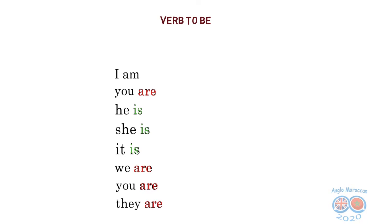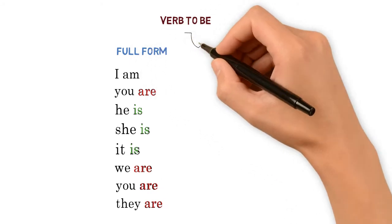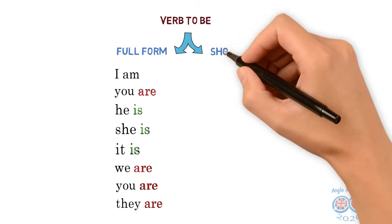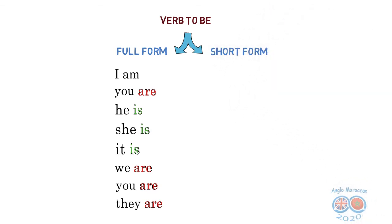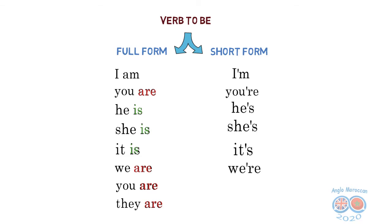Excellent! This is the full form, the formal one. And we have a short form — we use it generally in speaking. So instead of saying I am, we simply say I'm. Instead of you are, we say you're. He's, she's, it's, we're, you're, they're. There is no difference in meaning between the full form and the short form — the meaning is the same.